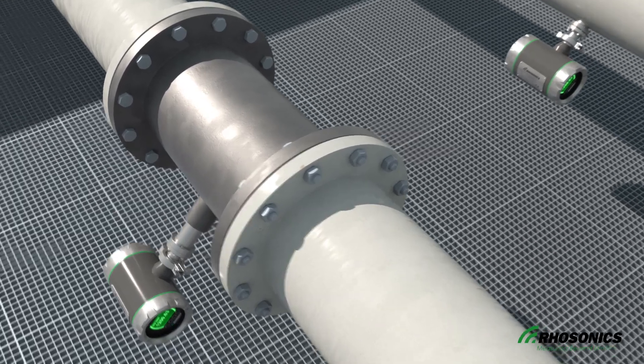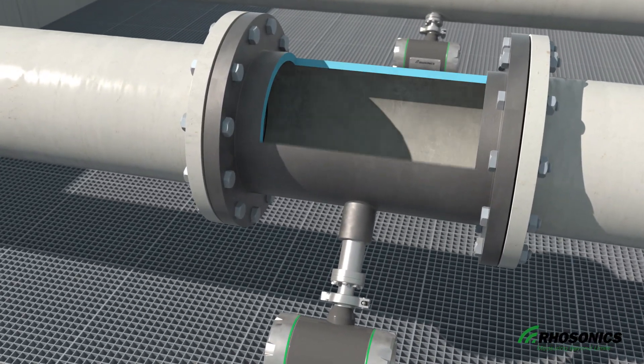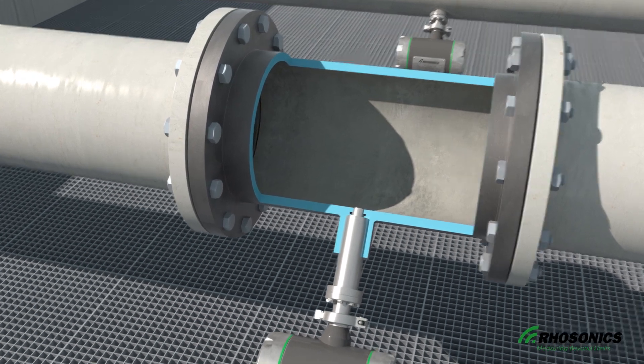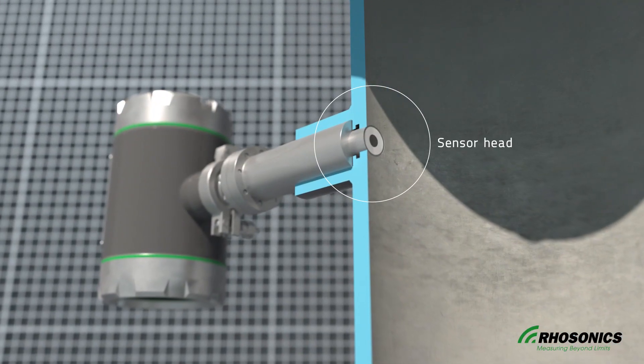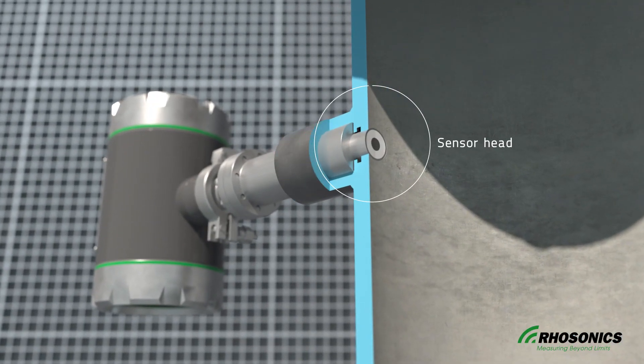The SDM sensor gets installed in-line and does not intrude the pipe. The sensor tip is made of the strongest ceramic materials, so it's protected against abrasion in the pipe.